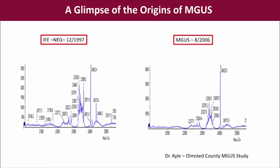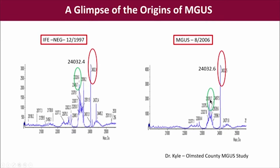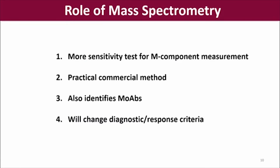Another important aspect shown here is diagnosing MGUS. This is a patient with MGUS in 2006. Back in 1997, there was no immunofixation spike. When the sample was tested with mass spectrometry, it turned out that there was a spike there evident back in 1997. We are going to be able to diagnose these early disease patients — MGUS — much earlier. It's going to allow us to understand the evolution and the biology of these earlier disease states. More sensitivity, a practical commercial method, identification of monoclonal antibodies used for therapy — it will change the diagnosis and response assessment.